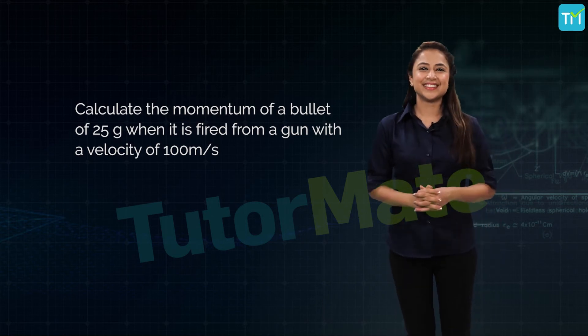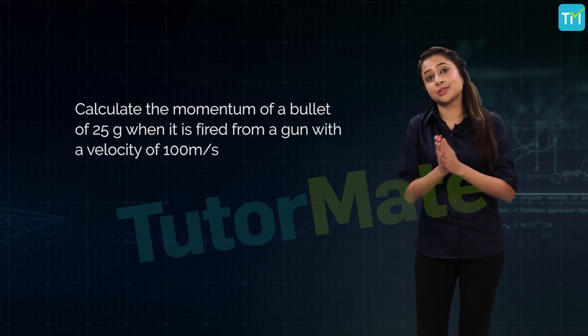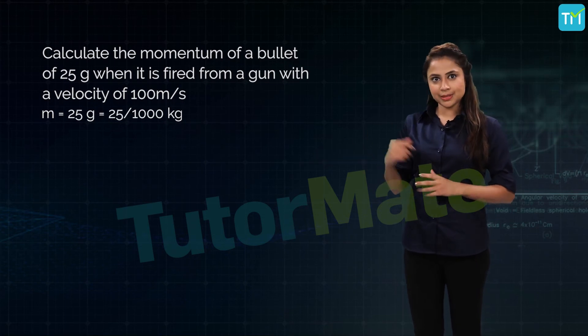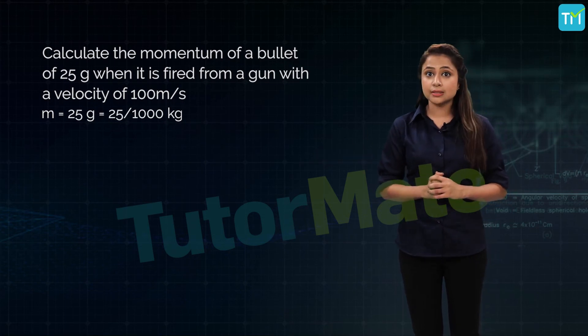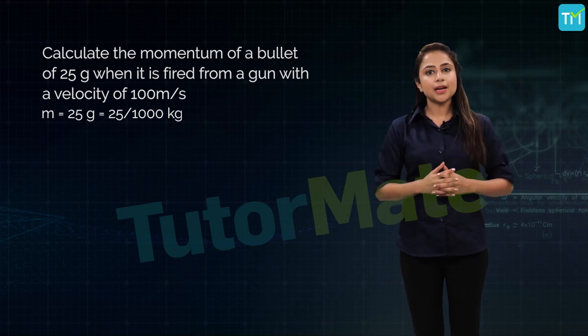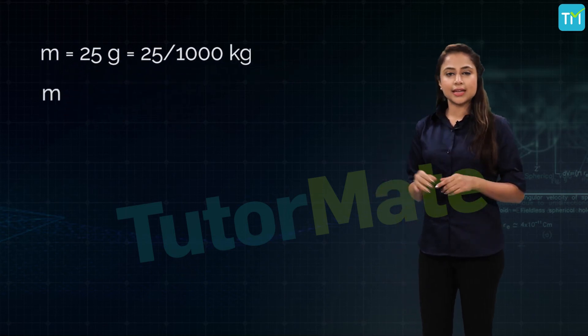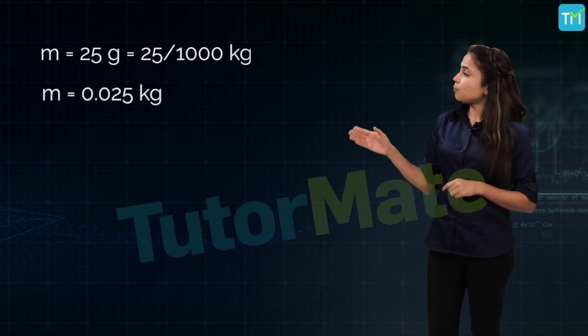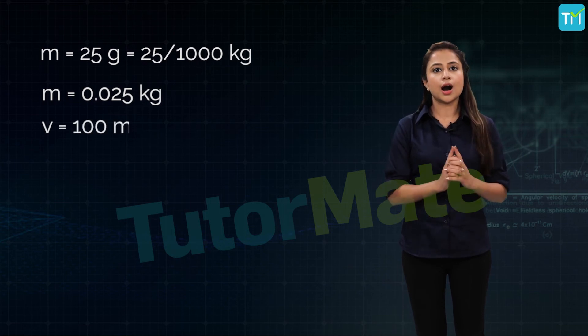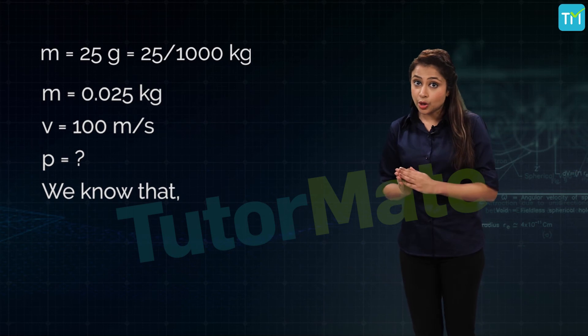Did you try it? I hope you did. Let me solve this one for you now if you haven't. We have the mass m of the bullet is 25 grams, but the SI unit of mass is kilogram. So let's convert it to kg by dividing by 1000. We get m = 0.025 kg. Next, velocity v = 100 meters per second.